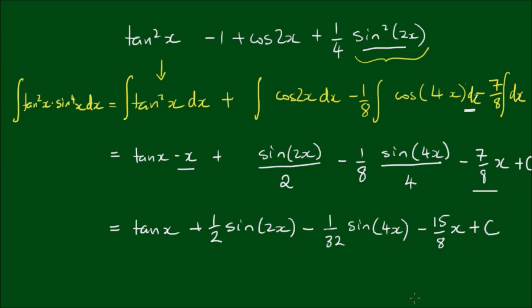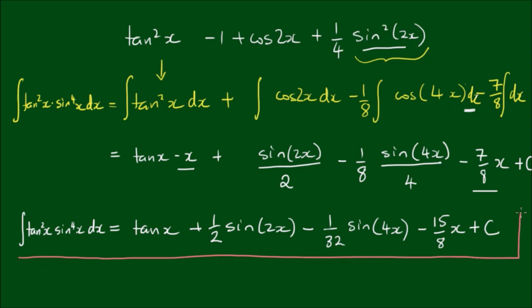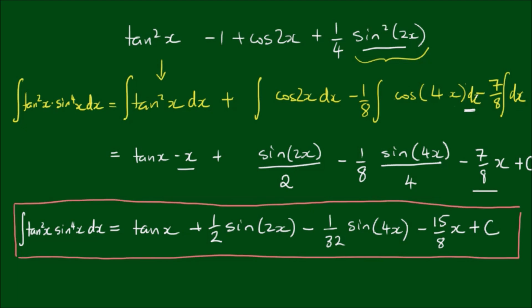So the integration of tan squared of x by sine to the fourth power of x dx equals tan of x, plus one half of sine of 2x, minus 1 on 32 of sine of 4x, minus 15 on 8 times x, plus C — don't forget the integration constant. If you think of a different approach, let me know. Thanks for watching — if you found it useful, please like and share it with your study mates, and I'll see you on the next video.